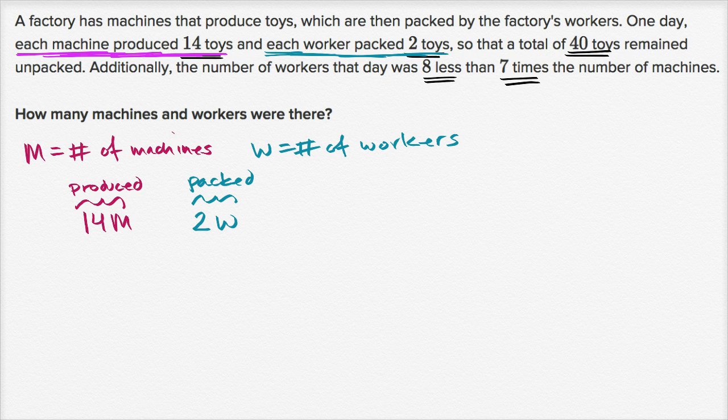And then they tell us the number of toys that remain, the total that remains unpacked. So the total that remains unpacked, we know that is 40. So 40, that we could do as produced but not packed. That's the total that remain unpacked.